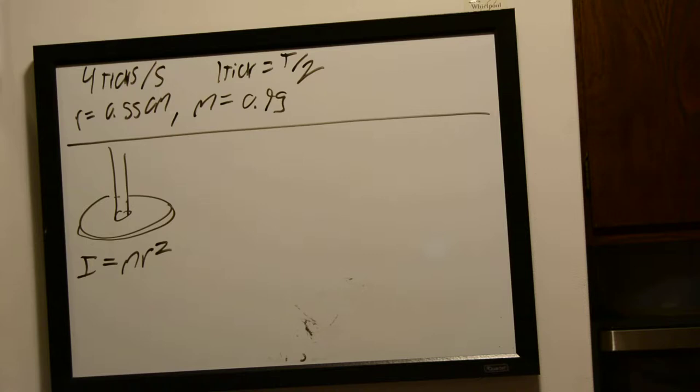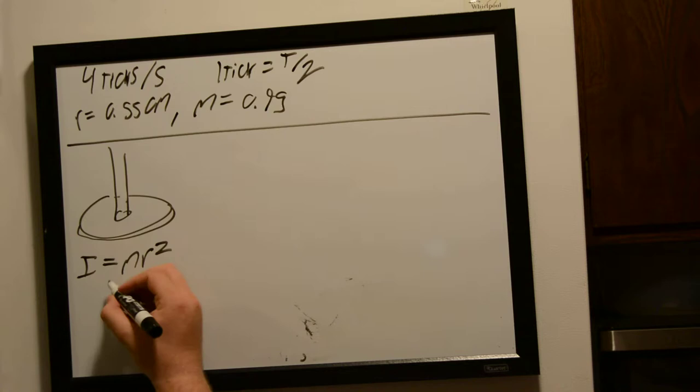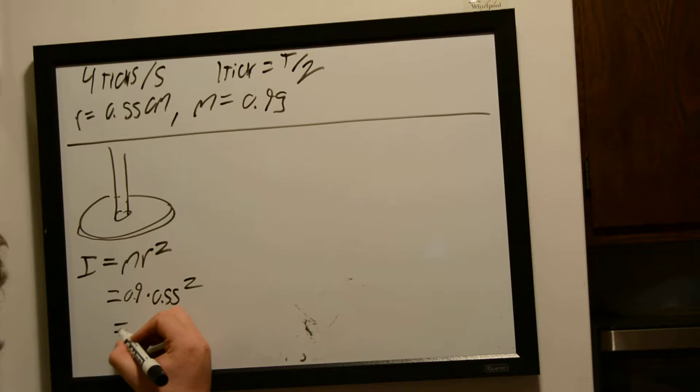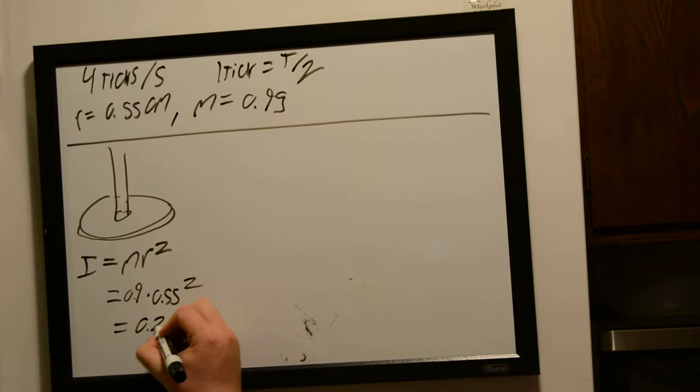We can just remember pi r squared for the volume of a sphere. So, this is pretty easy, we already have all this information, so it's going to be 0.9 grams times 0.55 centimeters squared. And that's going to come out to be 0.27 grams centimeters squared.